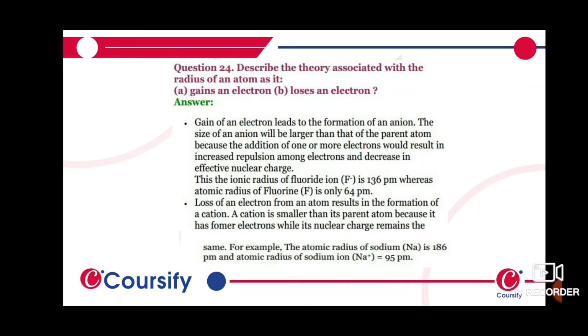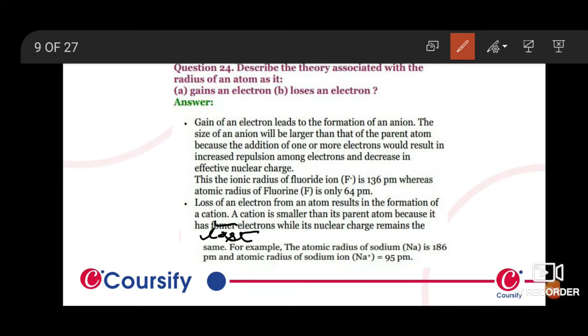A cation is smaller than its parent atom because it loses one electron while its nuclear charge remains the same. For example, the atomic radius of sodium (Na) is 186 picometer and the atomic radius of sodium ion (Na⁺) is 95 picometer.